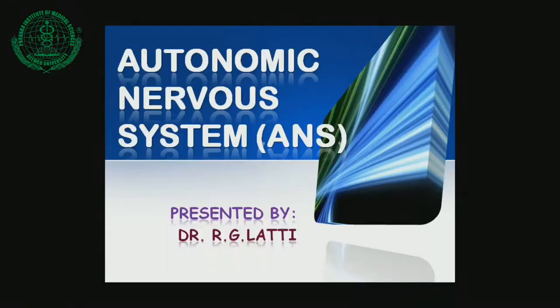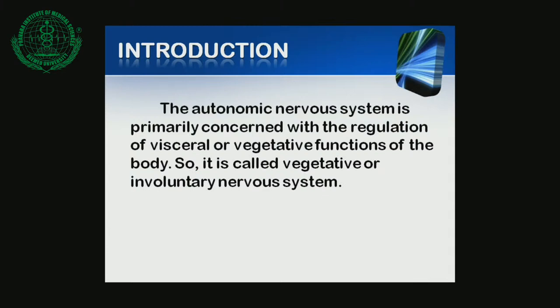The Autonomic Nervous System is primarily concerned with the regulation of visceral or vegetative functions of the body. It is also called the vegetative or involuntary nervous system.